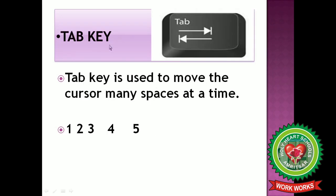Next is the tab key. Tab key is used when we want multiple spaces in between words or numbers. For example, here I typed 1 and 2 with a single space using the spacebar key, but when I pressed the tab key, you can see multiple spaces. So tab key is used to move the cursor many spaces at a time.